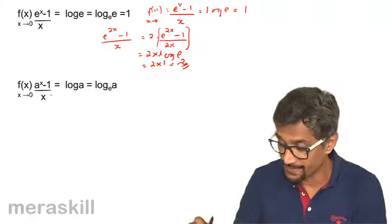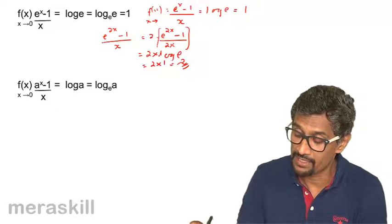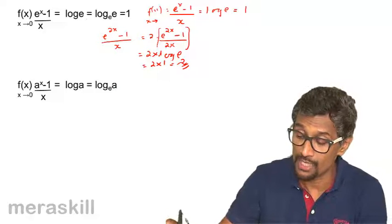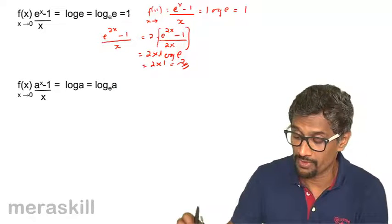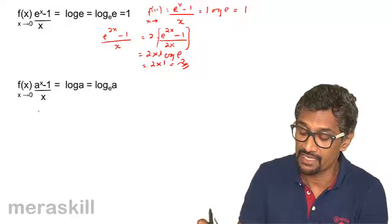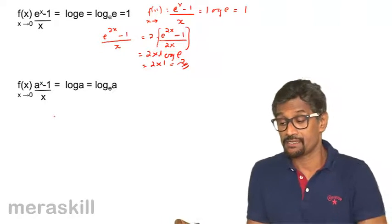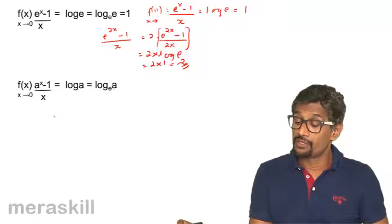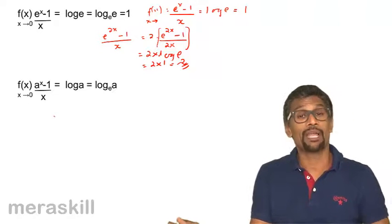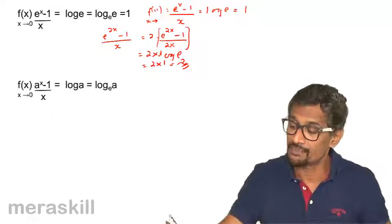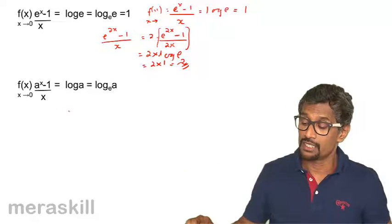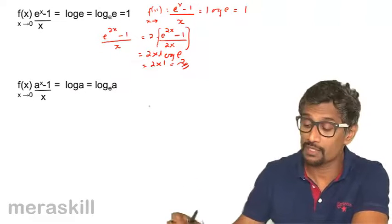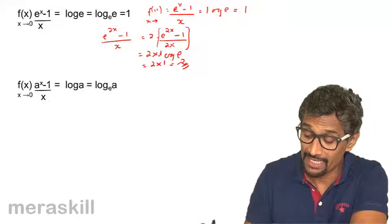Similarly, the limit of (a^x - 1) / x is log a to the base e. Just as the previous formula gave log e to the base e = 1, this one gives log a to the base e. This is a paired set of formulae concerning (e^x - 1)/x and (a^x - 1)/x, both as x approaches 0.